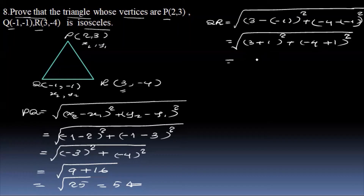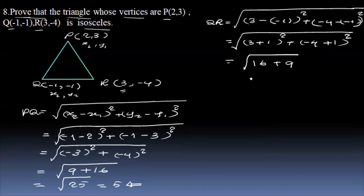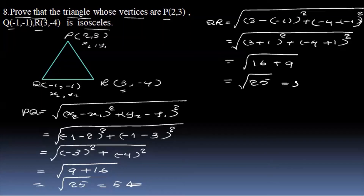3 plus 1 is 4. So minus 4 plus 1 is minus 3. So we have 4 squared plus minus 3 squared. The value of 25 — that is 25, and the square root of 25 is 5.